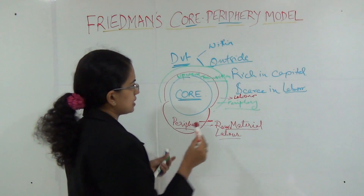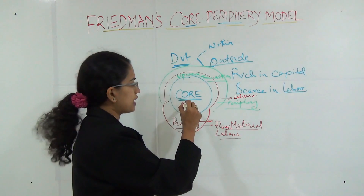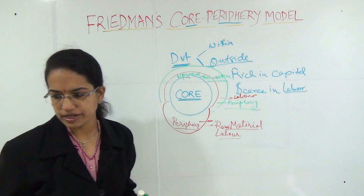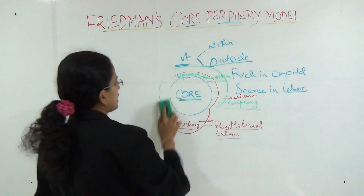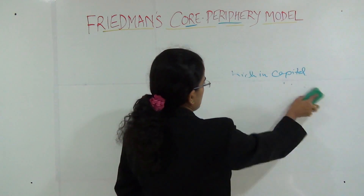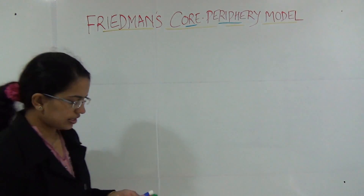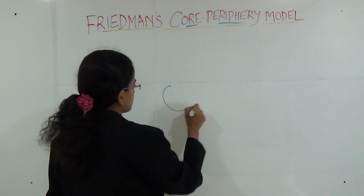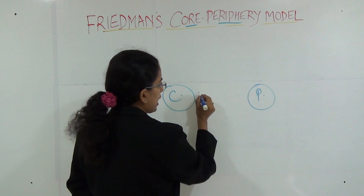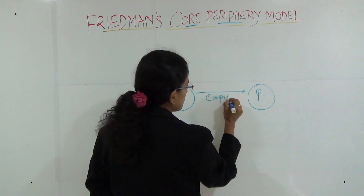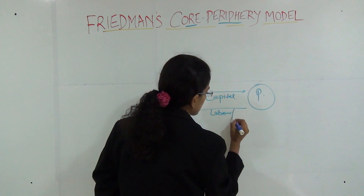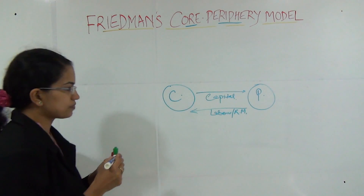Friedman basically said that for the core to survive, it is very important that there is adequate supply of labour and raw material. He explained a kind of balance between the core and the periphery — the core has capital which it can supply to the periphery, and on the other hand the periphery has the labour and raw material that it can supply to the core.